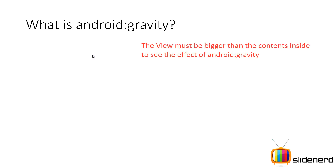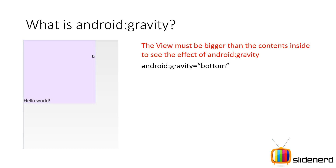The first thing you guys should notice is this: the view must be bigger than the contents to see the effect of Android Gravity. For example, if your view is wrap content in width and height, you will not see the effect of Android Gravity taking place inside. So here, if you guys notice, I have this 'hello world' and my Android Gravity is bottom, so it appears over here.